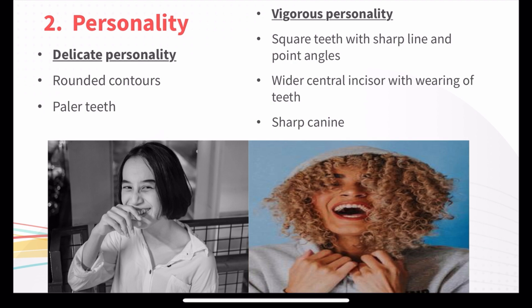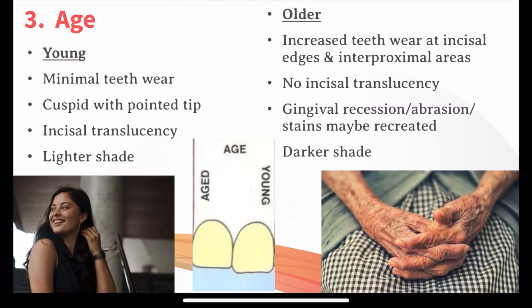The second factor is personality: delicate personality versus vigorous personality. In case of delicate personality, you will be giving teeth with rounded contours and you can opt for paler teeth. For a vigorous personality, you will be giving square-shaped teeth with sharp line and point angles. The central incisor will be wide with some wearing of the teeth, and you will give a very sharp or prominent canine.